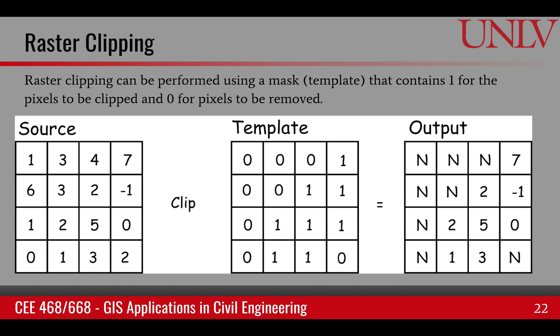The raster clipping operation is performed by using a mask or template. The mask contains 1 values for the pixels that are to be kept and 0 values for the pixels that are to be discarded or removed. For example, if this source data is clipped with this mask or template, these pixels will appear in the output. All of these pixels will be clipped out.